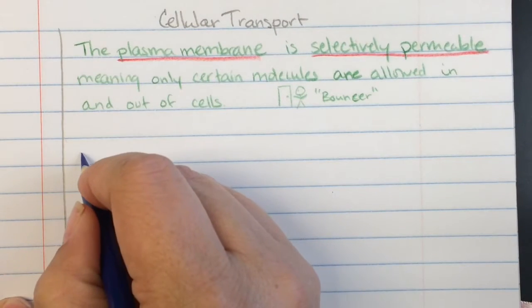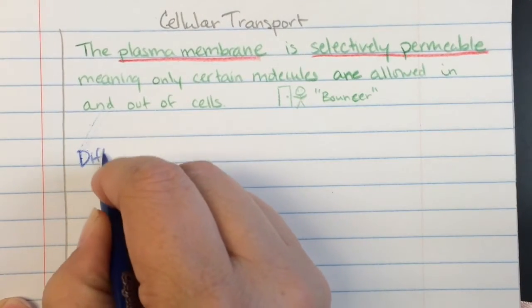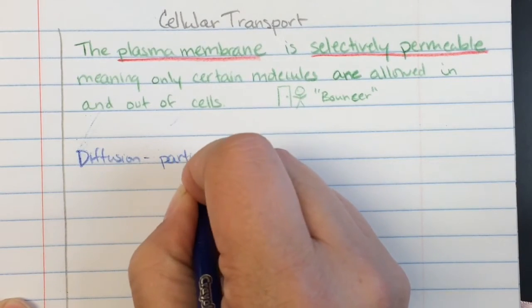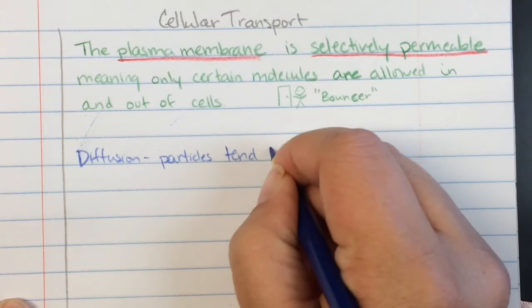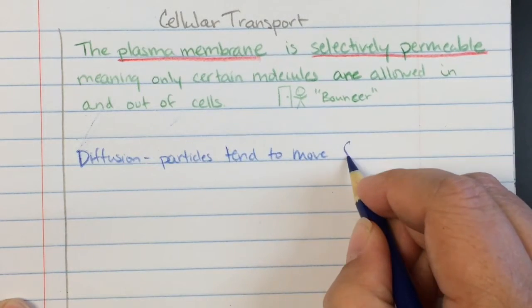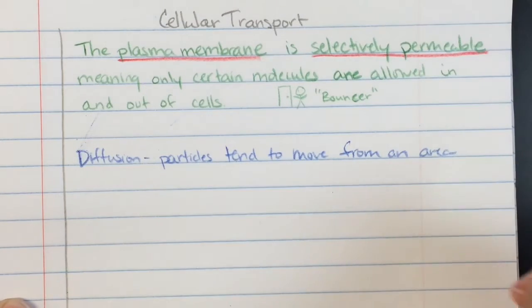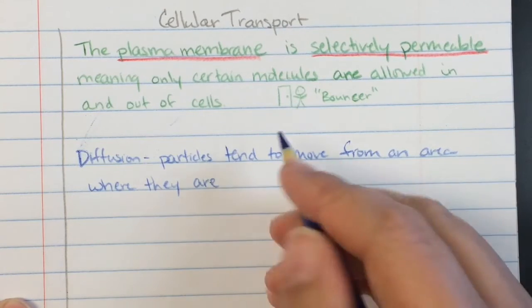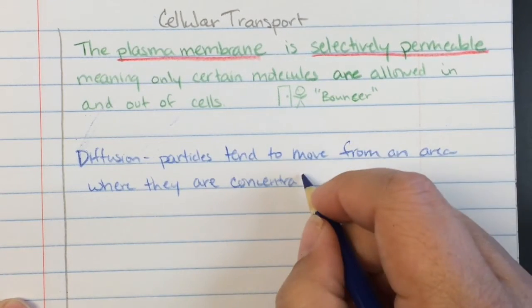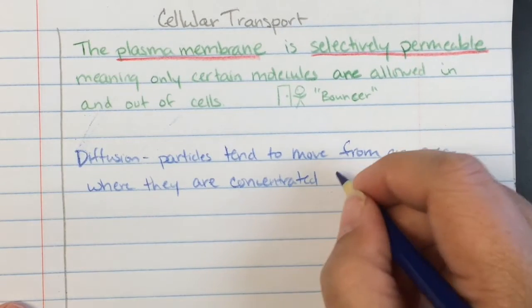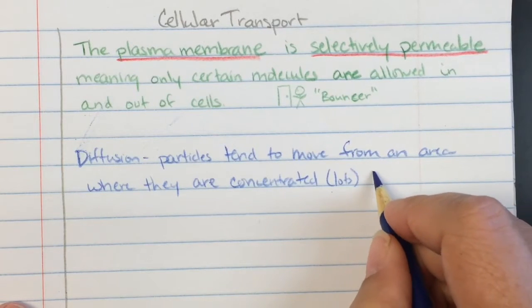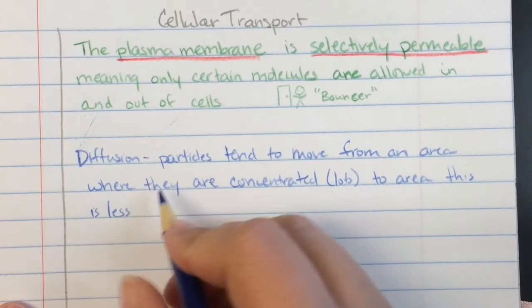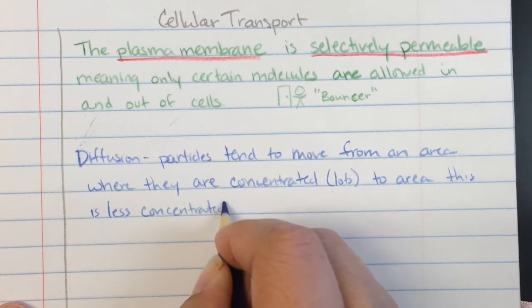The first way we're going to discuss is diffusion. So diffusion is stating the fact that particles or molecules tend to move from an area where they are concentrated, when we say concentrated we're not talking about just thinking really hard, we're talking about we have lots of them to an area that is less concentrated where we have just a few.